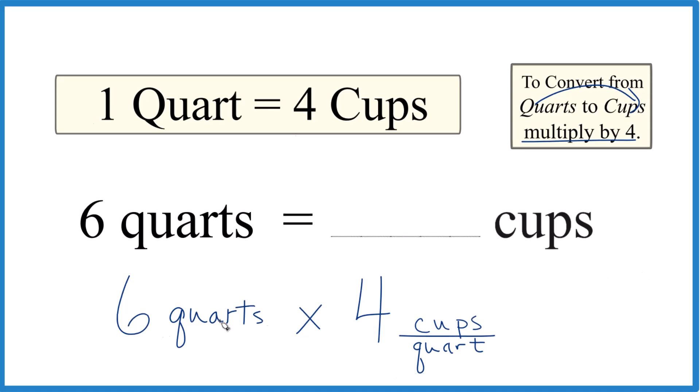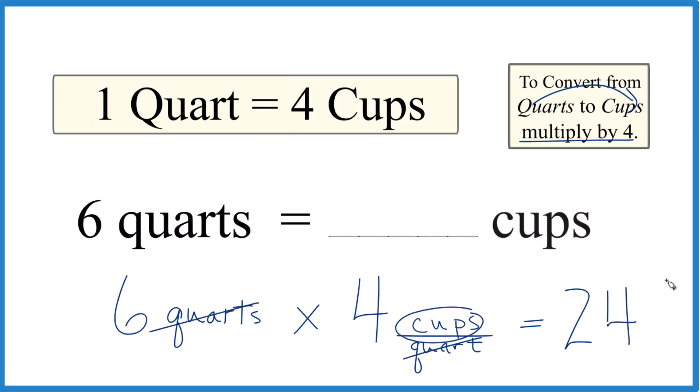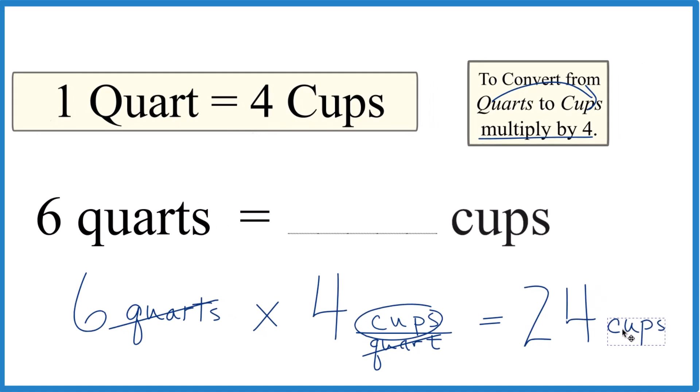So like we said before, six times four, that equals 24, but we have quarts on top and the bottom. They cancel out. We're left with cups. That's what we're looking for. So we have 24 cups.